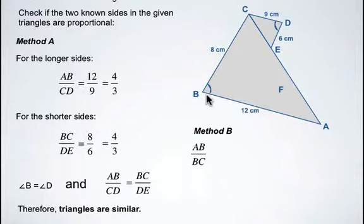So side length AB compared to side length BC, there and there. Inside that triangle we have a 12 to 8 ratio.